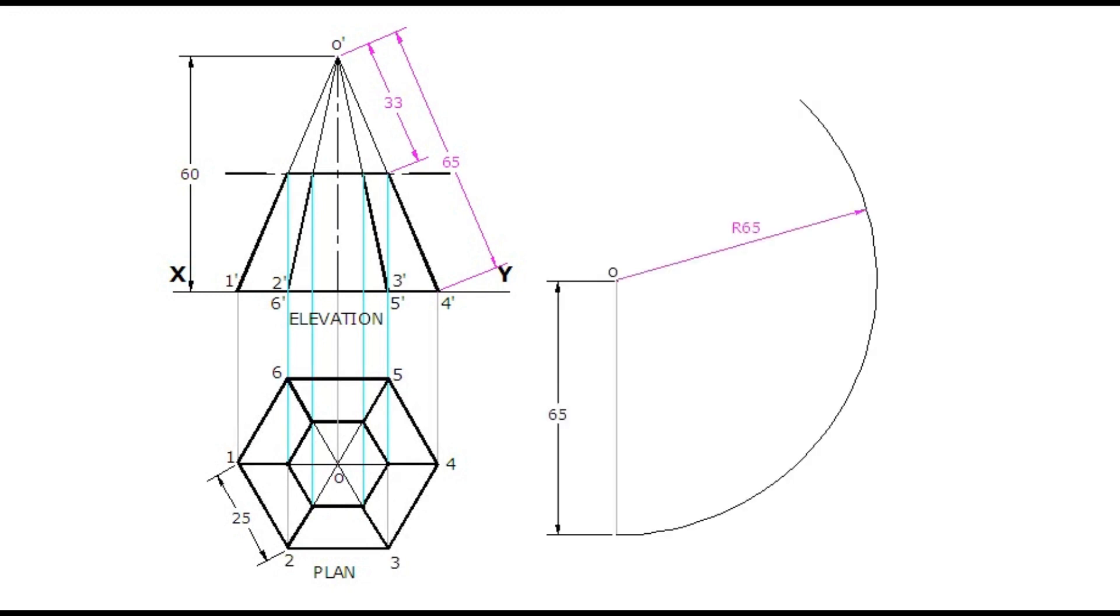Draw a line and an arc. Draw development for the complete pyramid. Measure the slant edge length of cut portion and draw the arc. Join these points and darken the required edges of development.